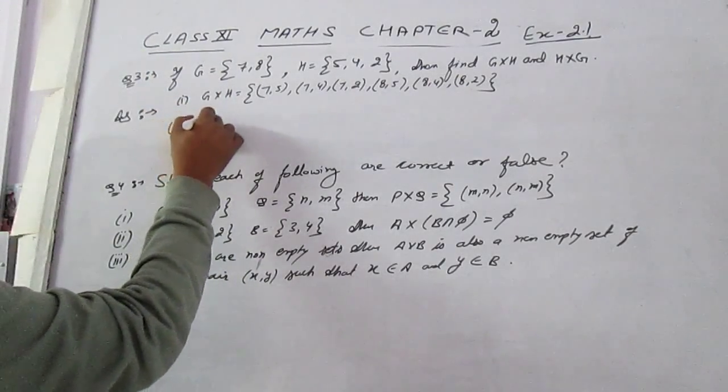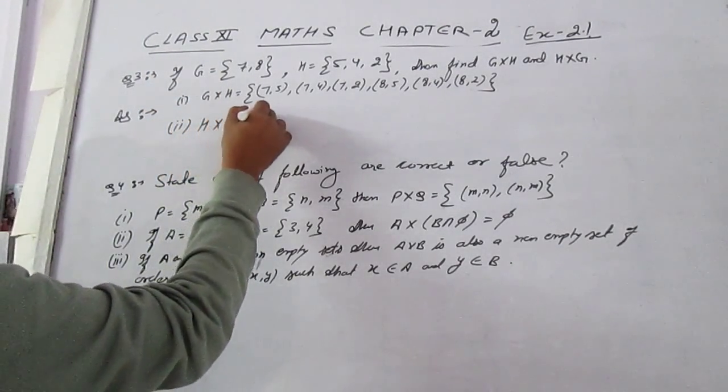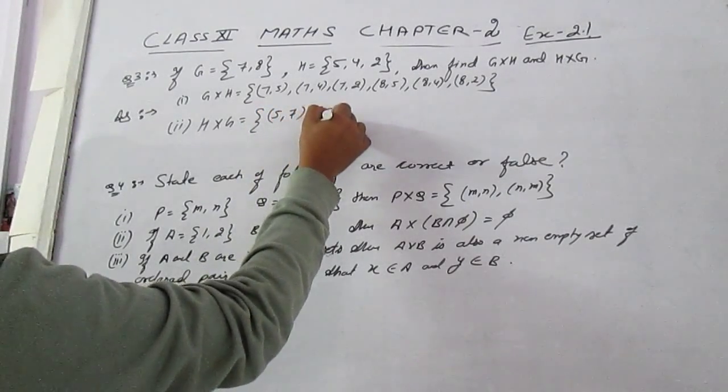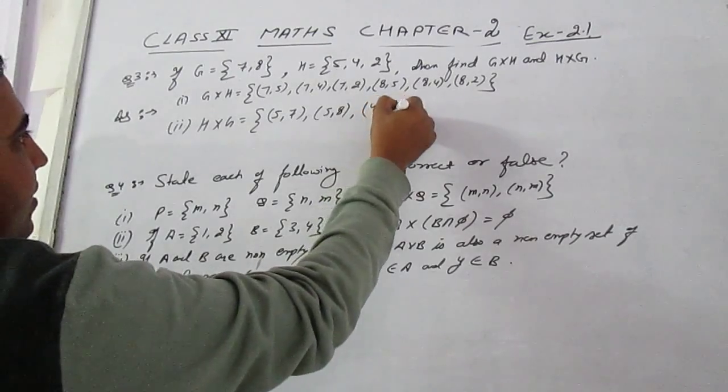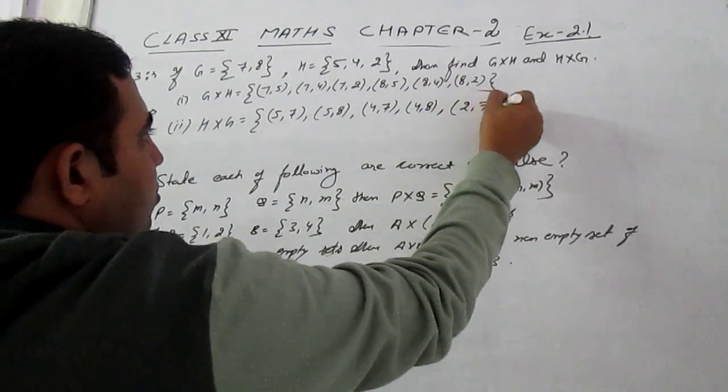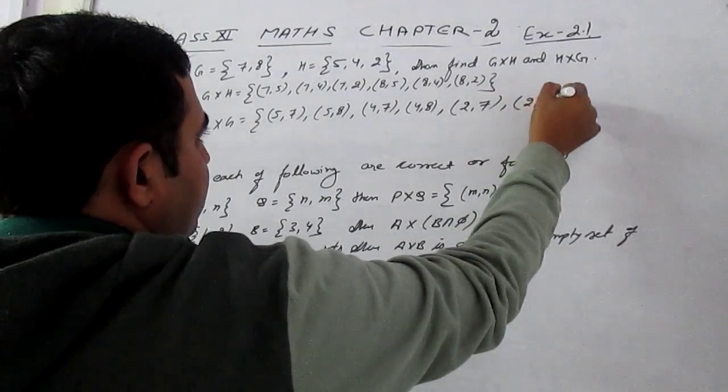Now, secondly, we will find out H cross Z and that is (5,7), (5,8), (4,7), (4,8), (2,7), (2,8).